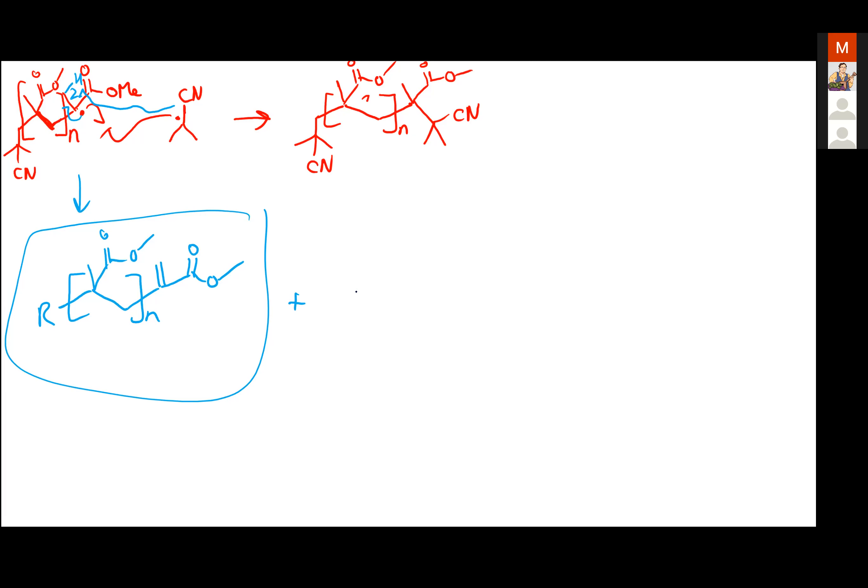Combining two AIBN radicals is actually hard because they're both tertiary and sterically hindered. What you really need to do is terminate your growing polymer chain. Drawing two full polymer chains combining is just really awkward, so you don't need to do that on the exam.